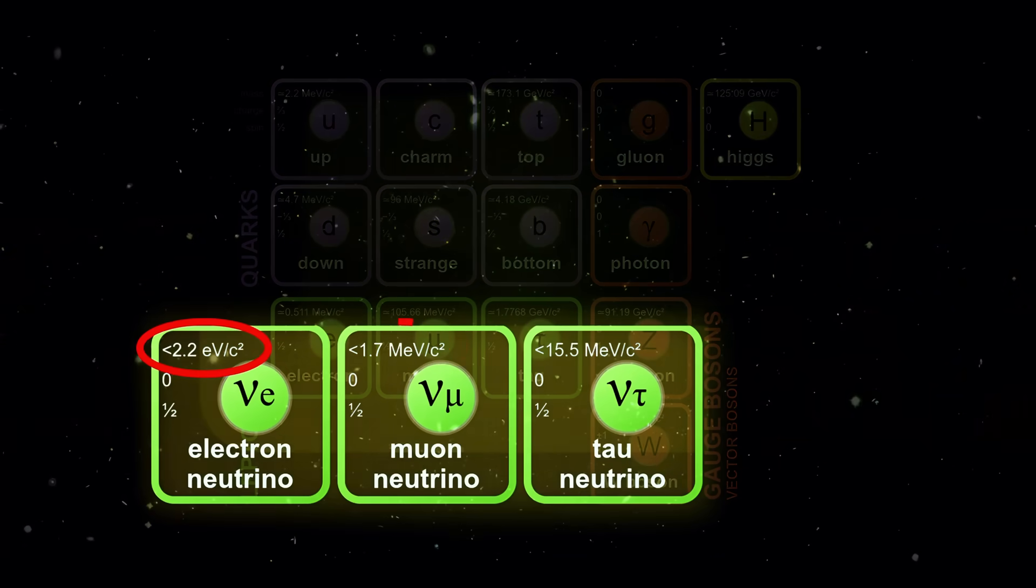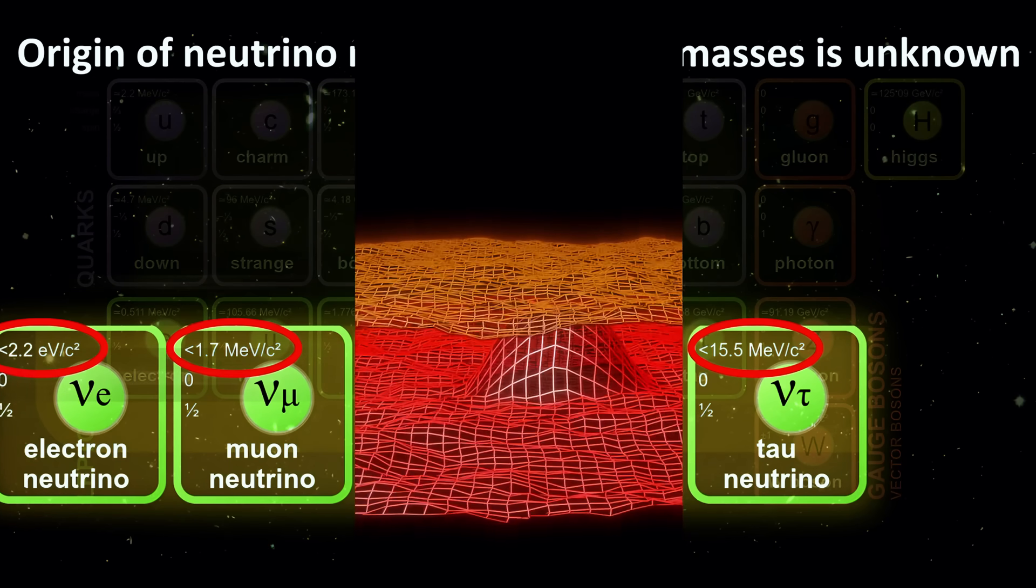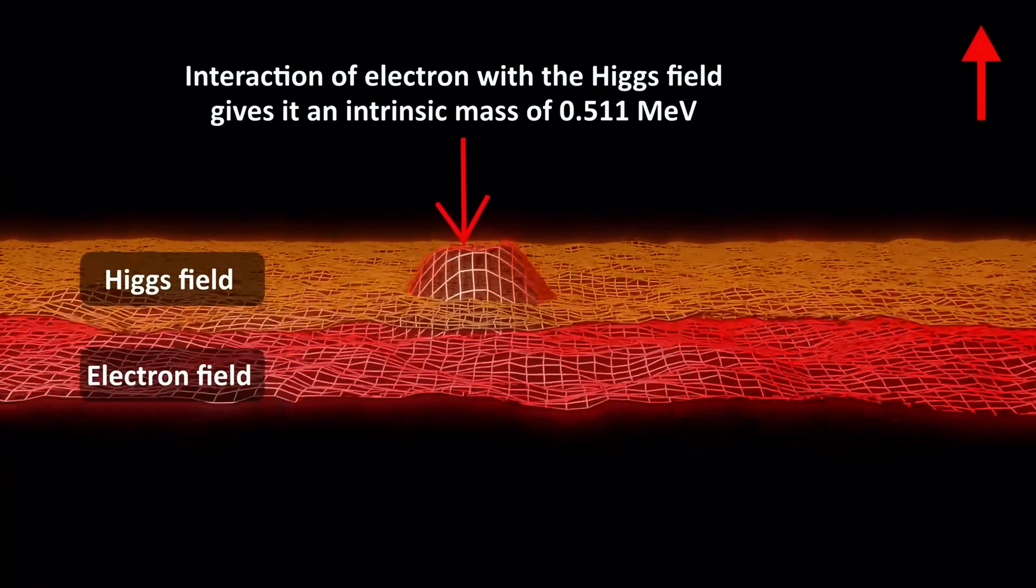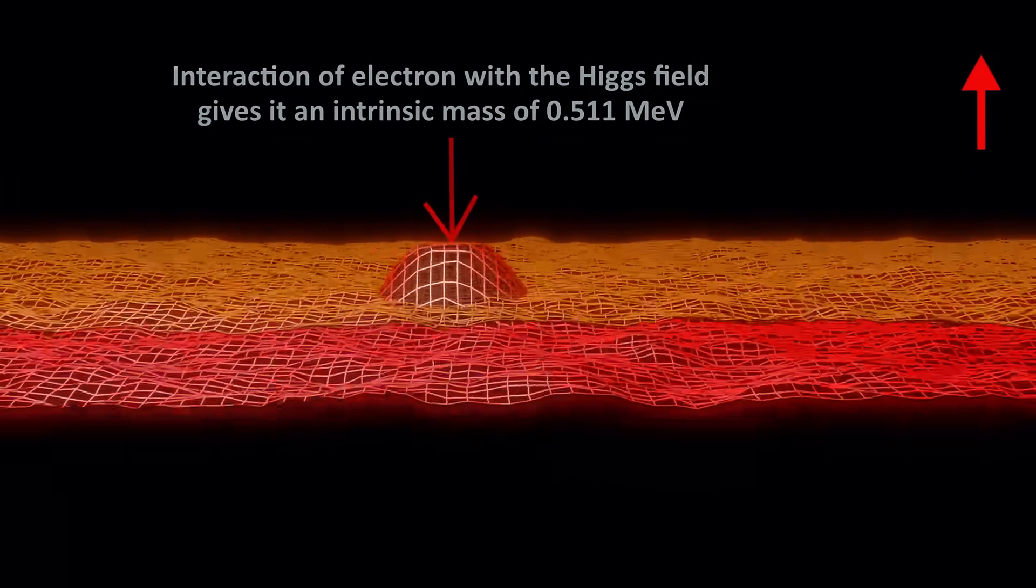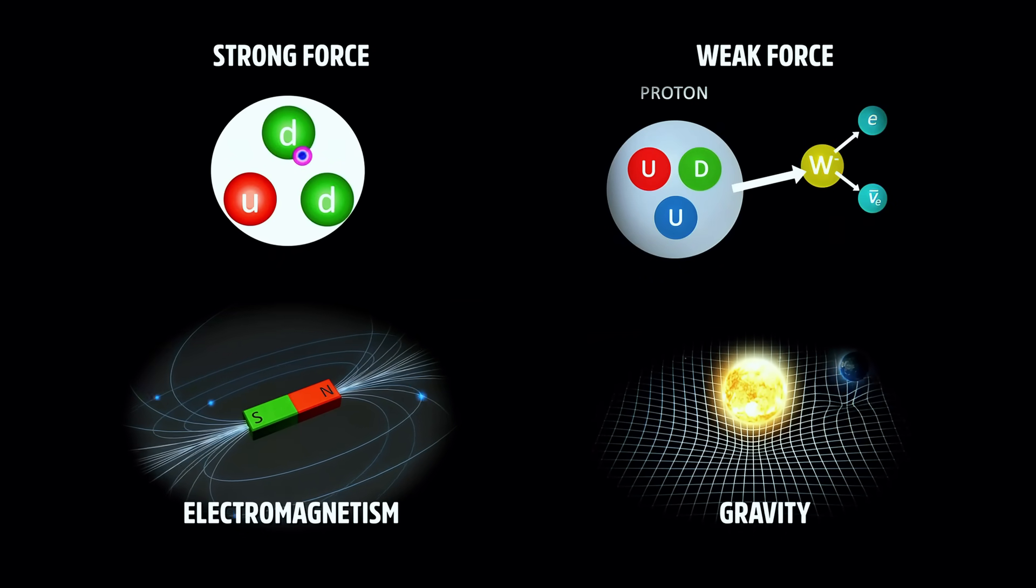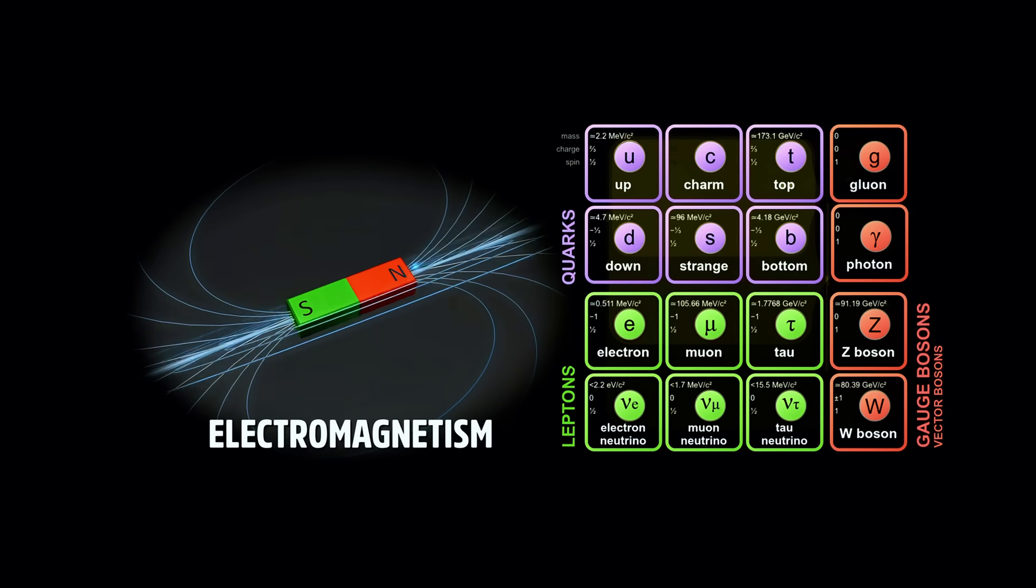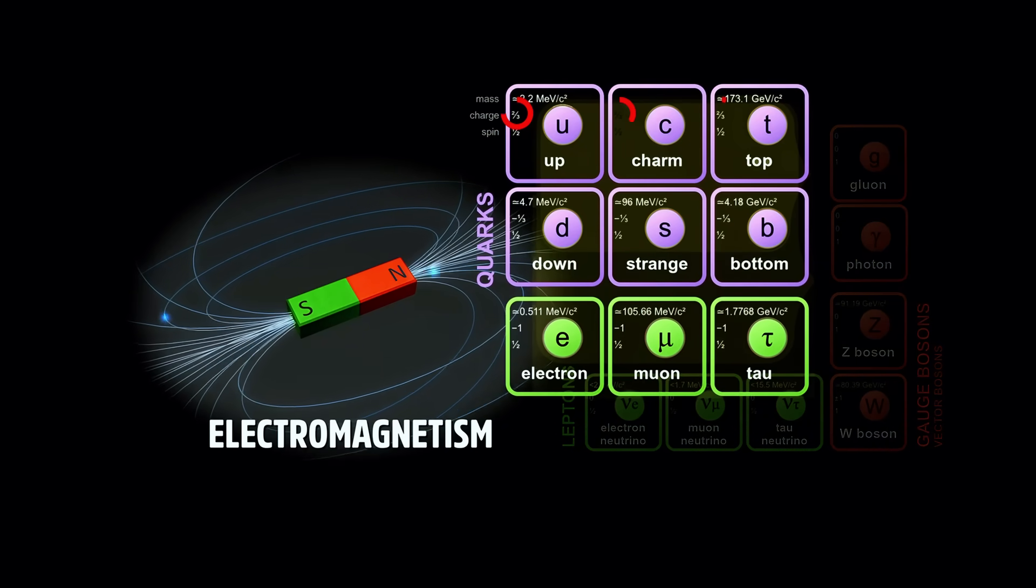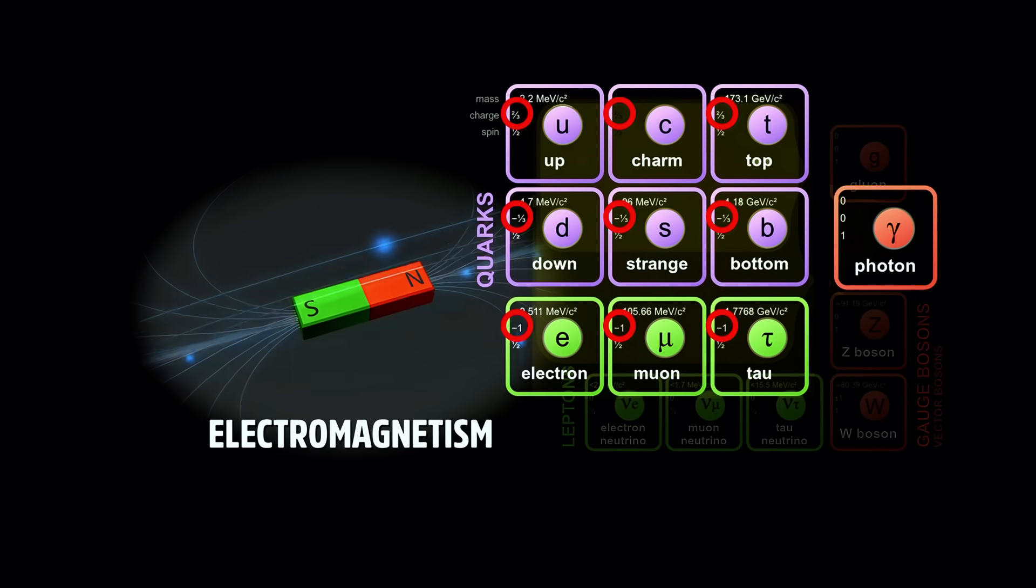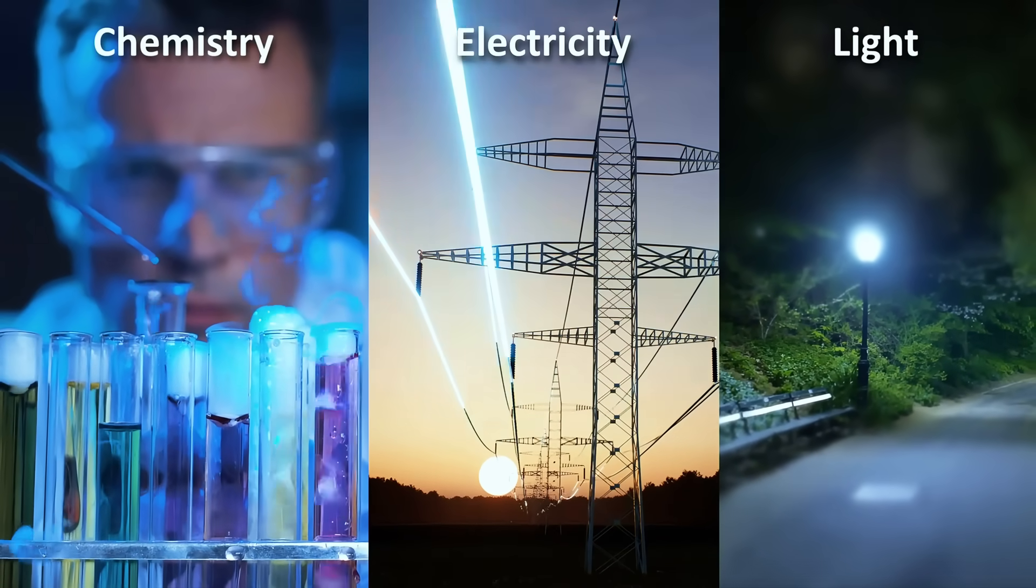Neutrinos also have a tiny mass, the exact origin of which is still under study. There are three interactions or forces described in the standard model. First, electromagnetism, which acts on electrically charged particles like the quarks and leptons. It has infinite range and is carried by photons. It explains chemistry, electricity, light, and most daily life physics.